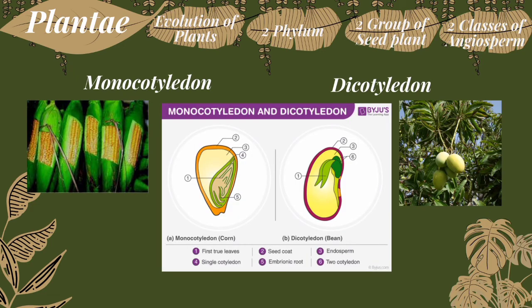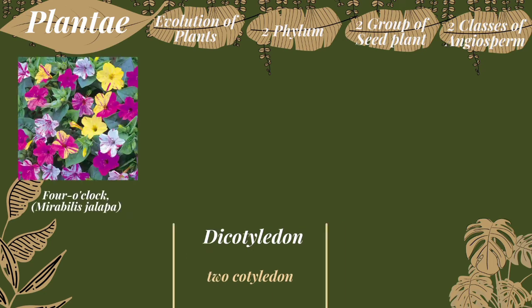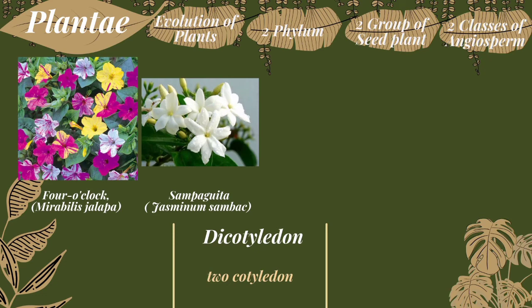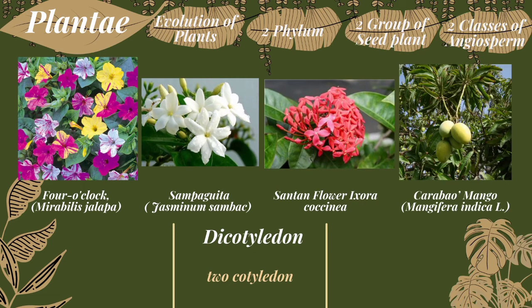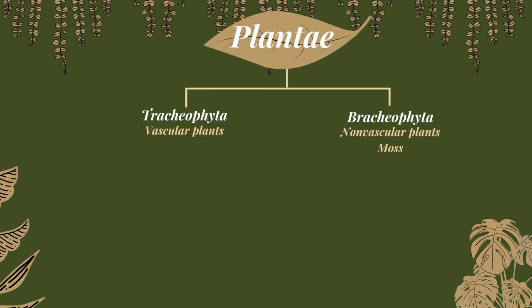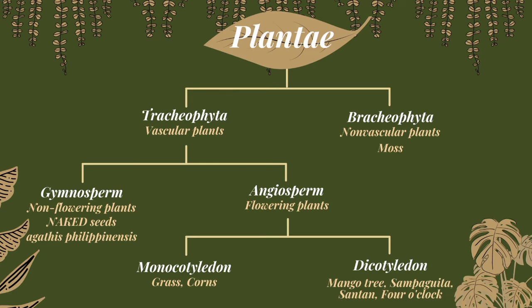Monocotyledon embryos contain only one cotyledon — a first single leaf or one of the first pair of leaves — while dicotyledon embryos contain two cotyledons. An example of monocotyledon is corn, the Zea mays or gahilang. Examples of dicotyledon are carabao mango and flowers like four o'clock, sampaguita, and santan. This is a diagram of kingdom Plantae for you to see the divisions and classes that fall under it.